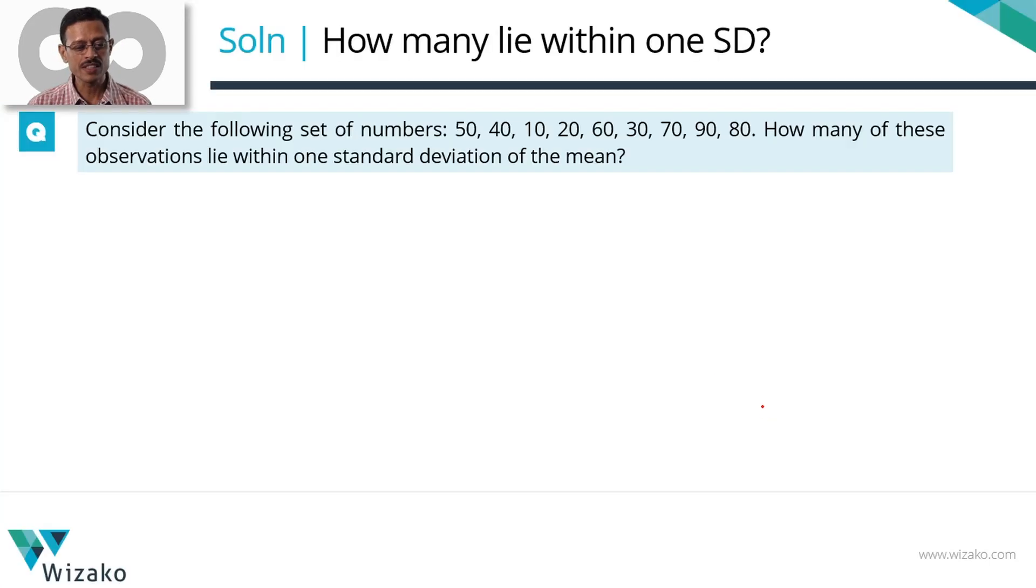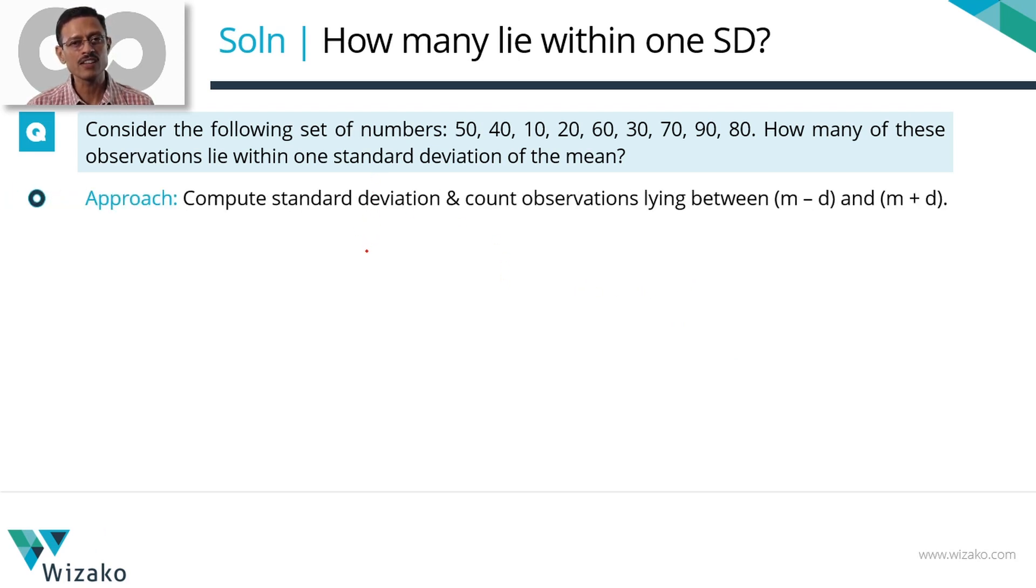What is the approach? The first thing, let's find out the mean. Subsequently, compute the standard deviation after having found out the mean. And then let's find out what is the value of mean minus deviation, what is the value of mean plus deviation and count the observations that lie within it. Finding the mean is actually a part of finding out the standard deviation. So it's a two-step process for us. Find the standard deviation and then count the observations that lie between mean minus deviation and mean plus deviation.